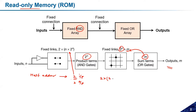With n = 2: 2^2 = 4, then 4 × 2 = 8, then 8 × 2 = 16. So sixteen fixed links will be on the input side of the read-only memory for a half adder design.